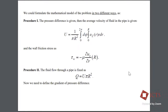I think there are no questions here — it's quite transparent. Now I would like to formulate the mathematical model of the problem in two different ways. In the first procedure, the pressure difference is given. Then the average velocity of fluid in the pipe will be given in the form of an integral, in which phi changes from zero to two pi and U_Z changes from zero to the external radius. The wall friction stress is given as the first partial derivative in the radius, evaluated at the external radius.